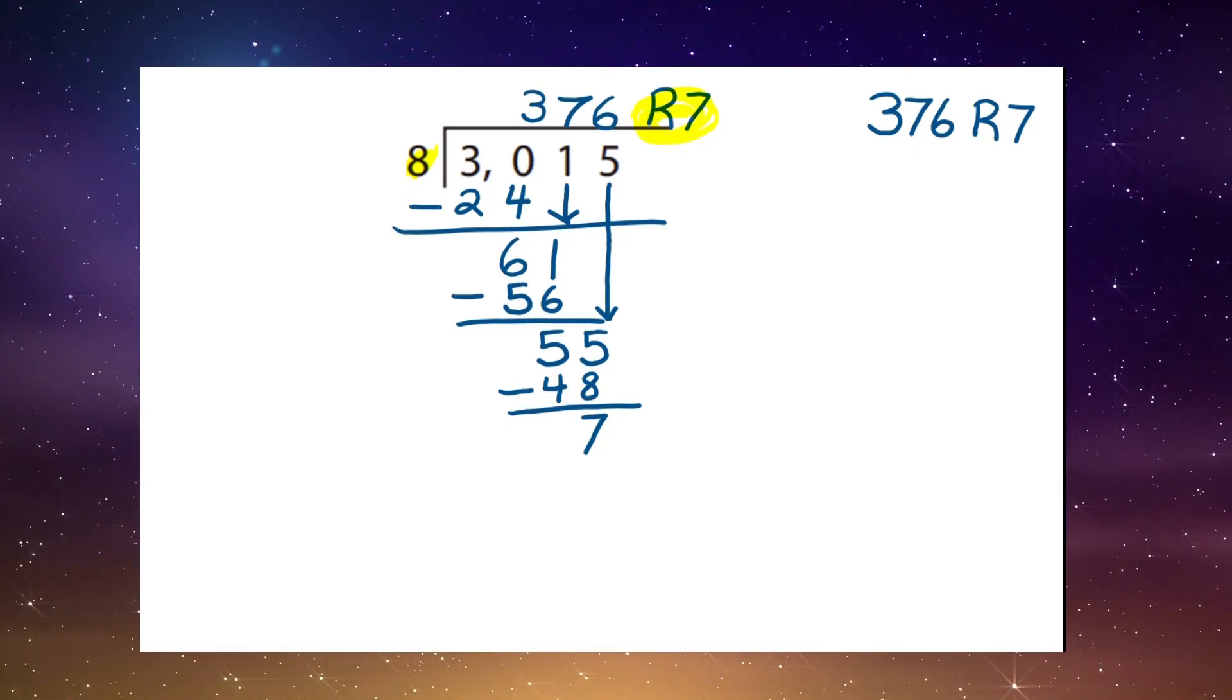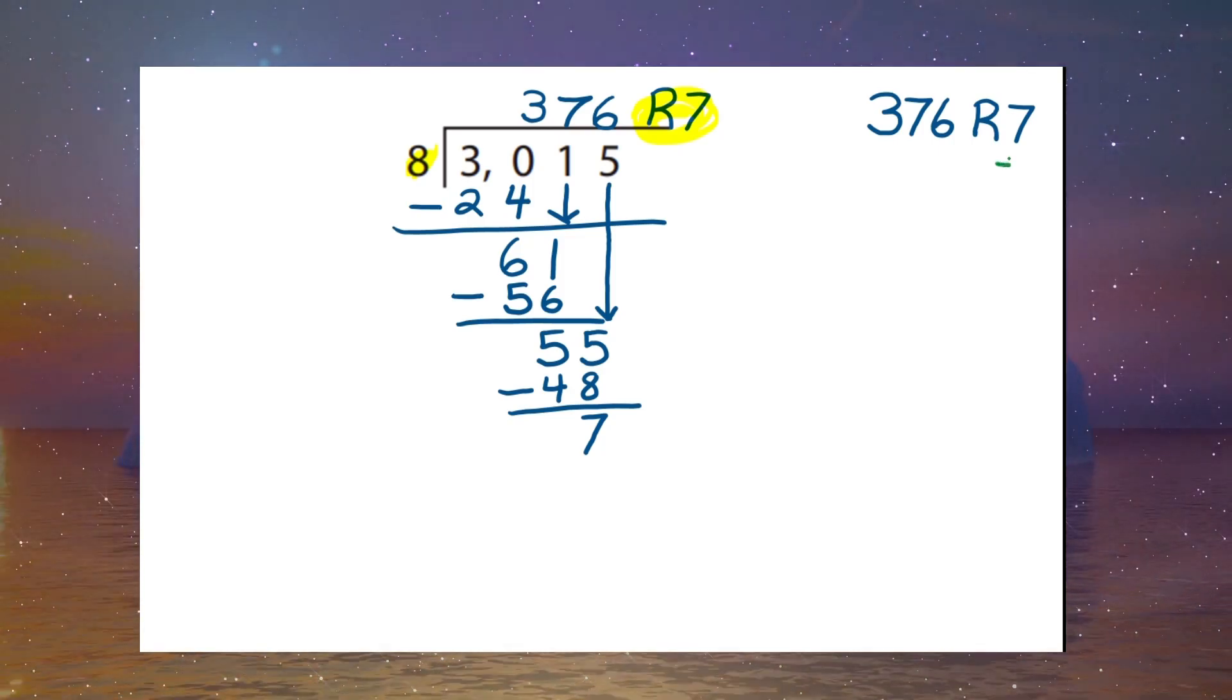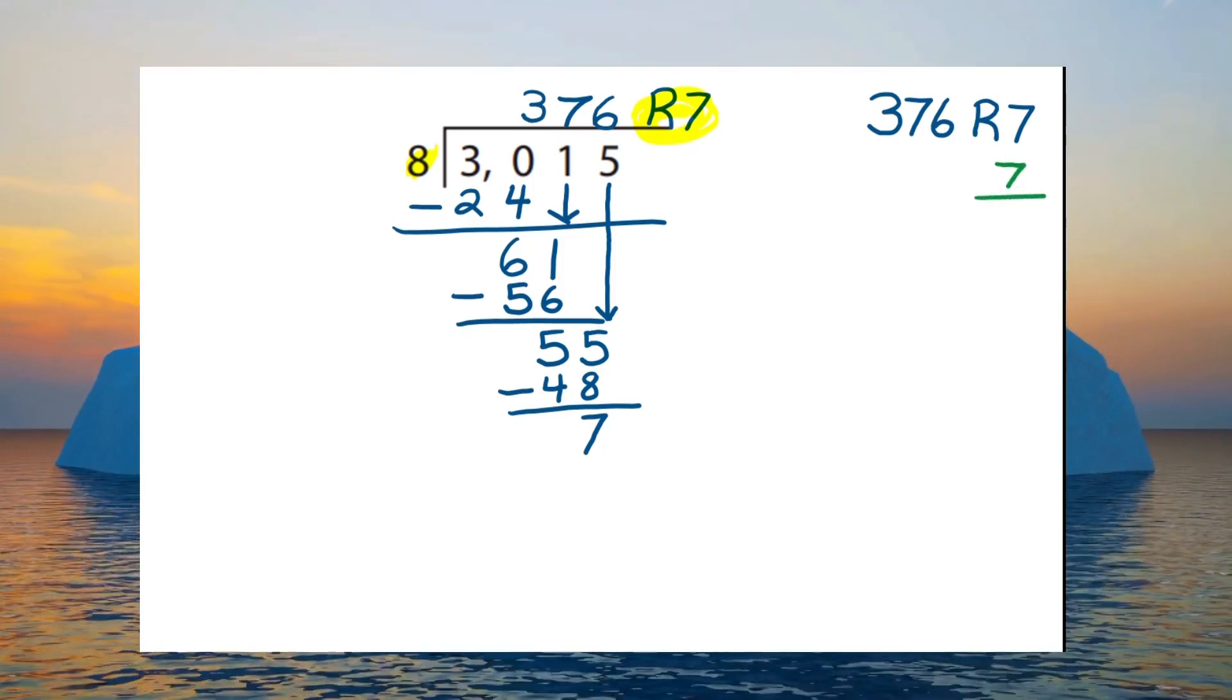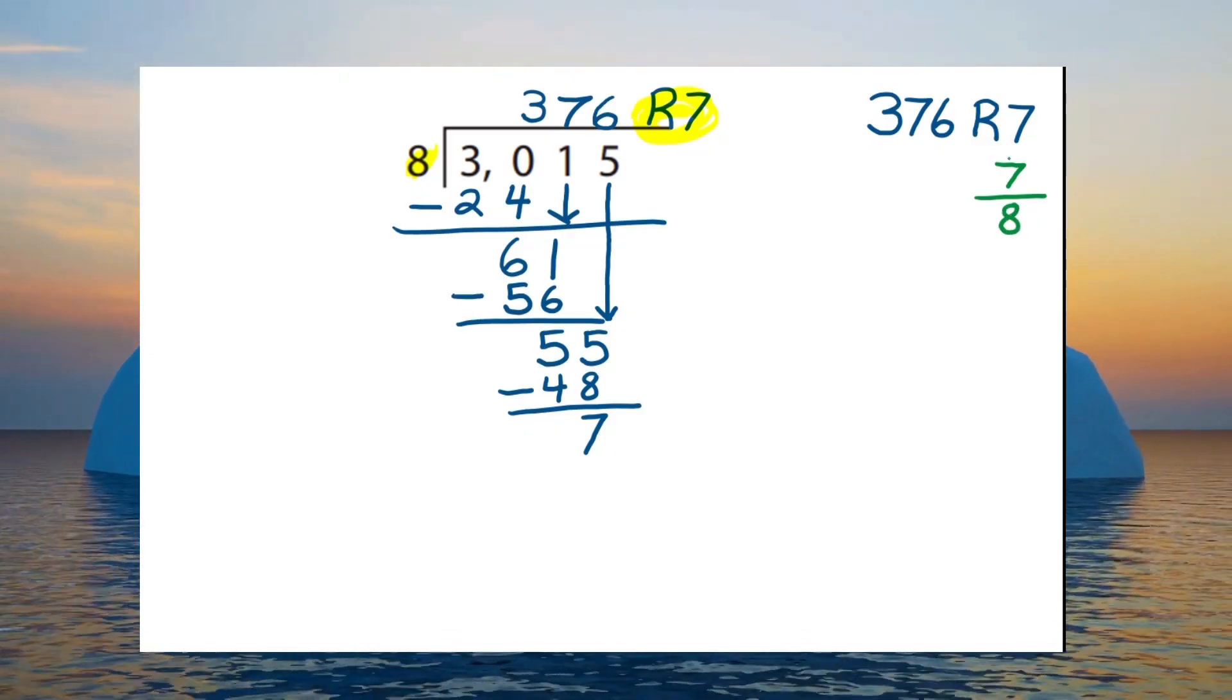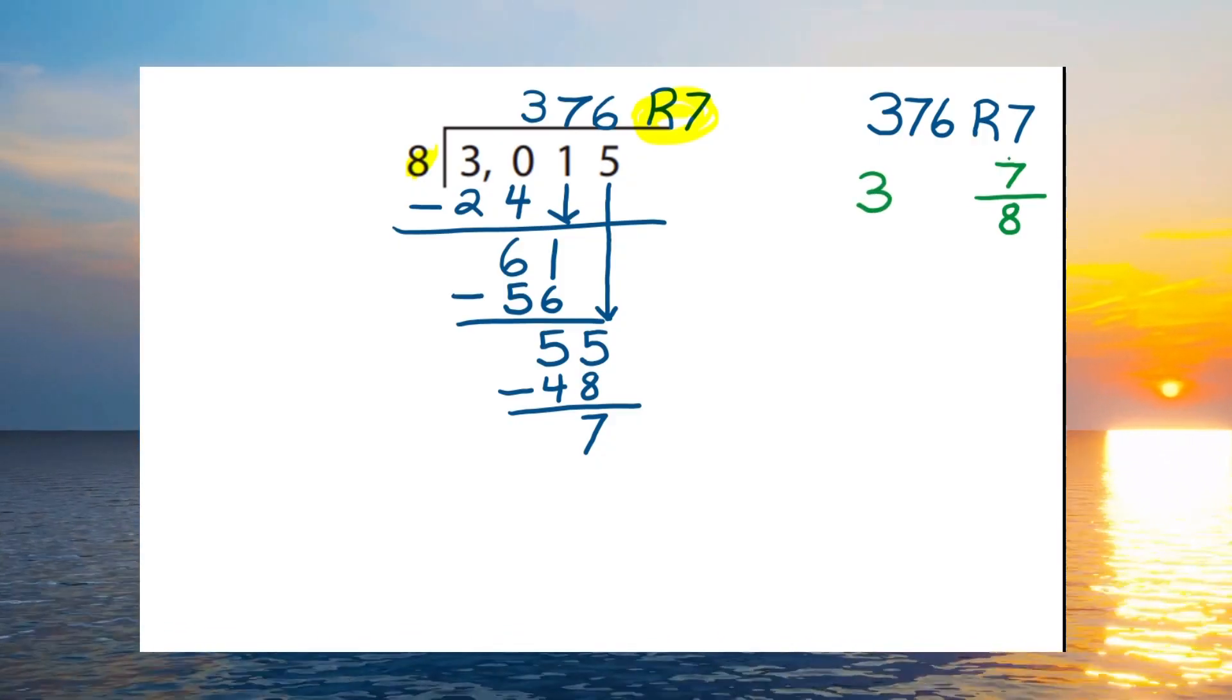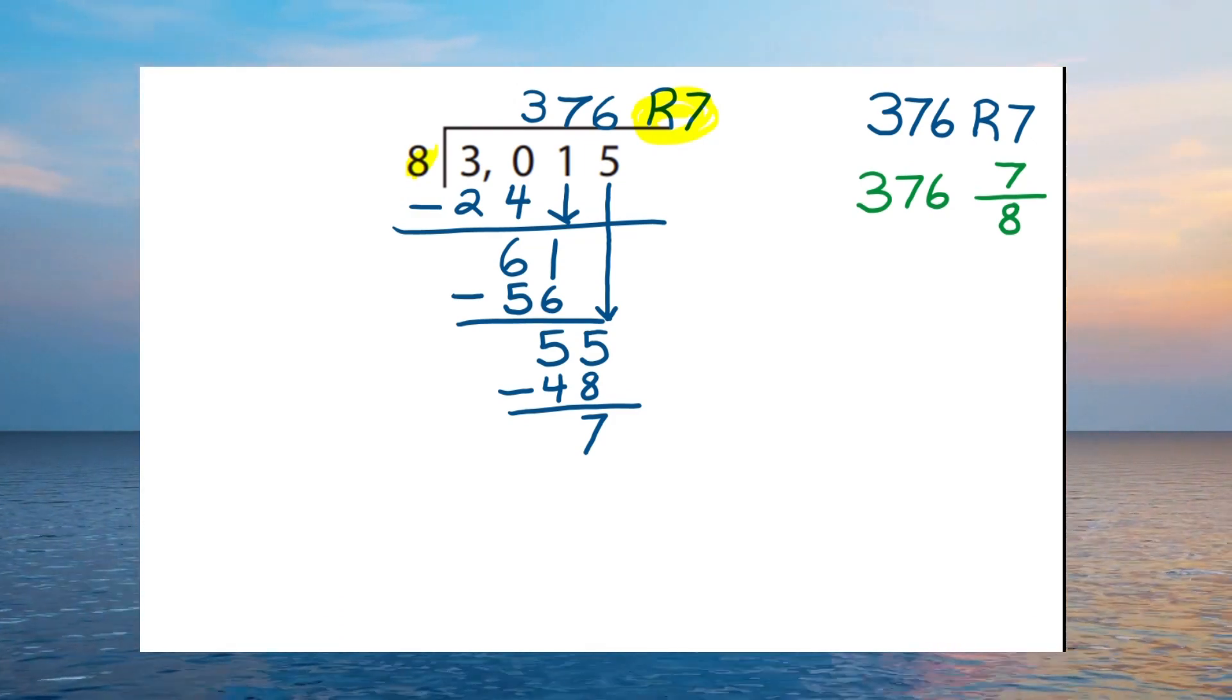For we can simply take that remainder and we can place it on top, just like this, and place the eight below, giving us a new answer of three hundred seventy-six and seven eighths.